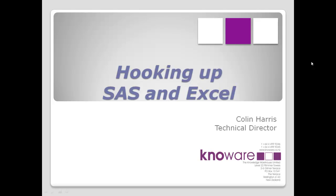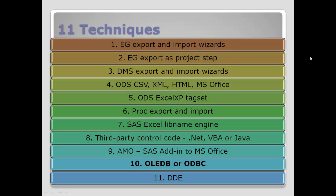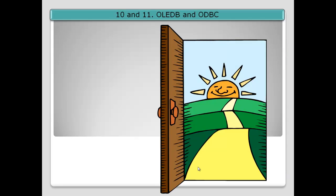Hello, this is Colin Harris, continuing this series on hooking up SAS and Excel. We have covered a range of different techniques for interfacing SAS and Excel, and you can see the whole list of 11 different techniques in the slide here. The others are covered in other videos within the series. This particular video is concentrating on technique number 10, which is using OLE DB or ODBC to interface between SAS and Excel.